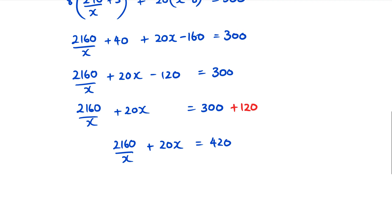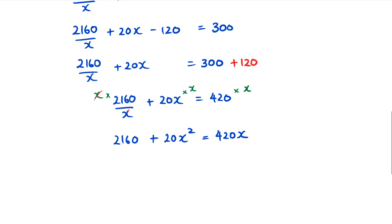I'll multiply every term by X. The two X's cancel out and I'm left with 2160 + 20X² = 420X. Now I want to rearrange this so everything is on the left-hand side, bringing the 420X across.